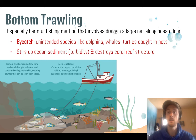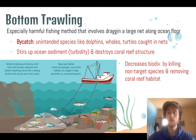Another problem is that the net actually scrapes up coral reef along with the fish, disturbing and breaking apart coral reef ecosystems that are home to thousands of different species — a major loss for biodiversity. We decrease biodiversity directly by accidentally killing bycatch species, and also indirectly by destroying the coral reef habitats that many organisms rely on.